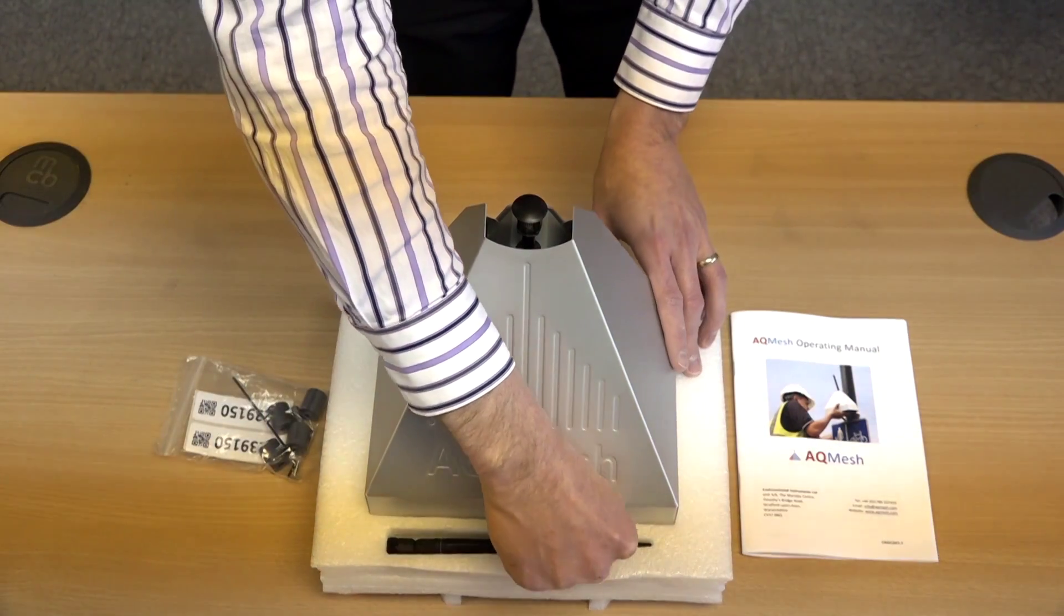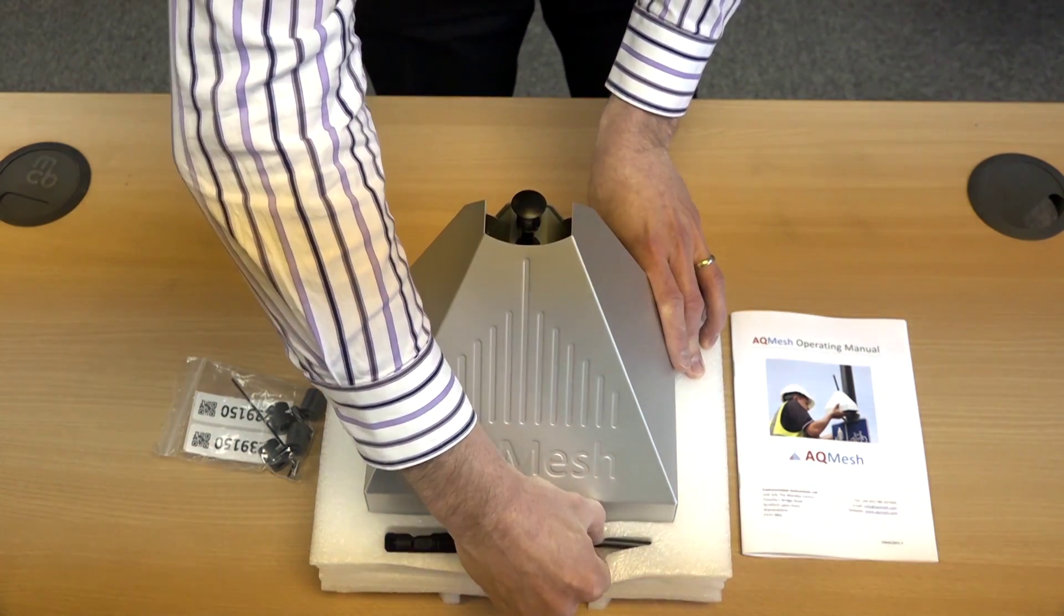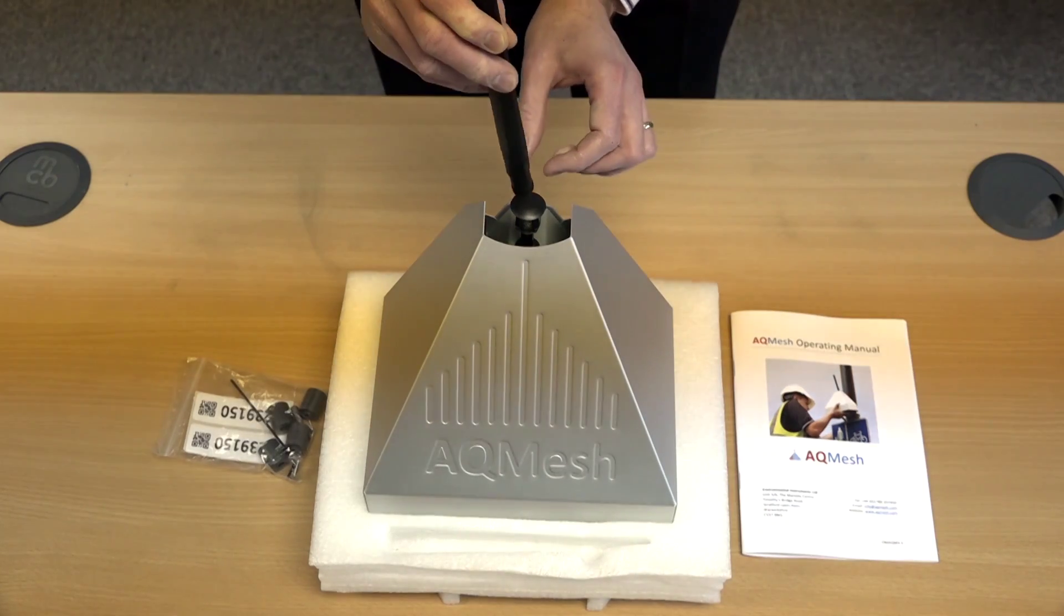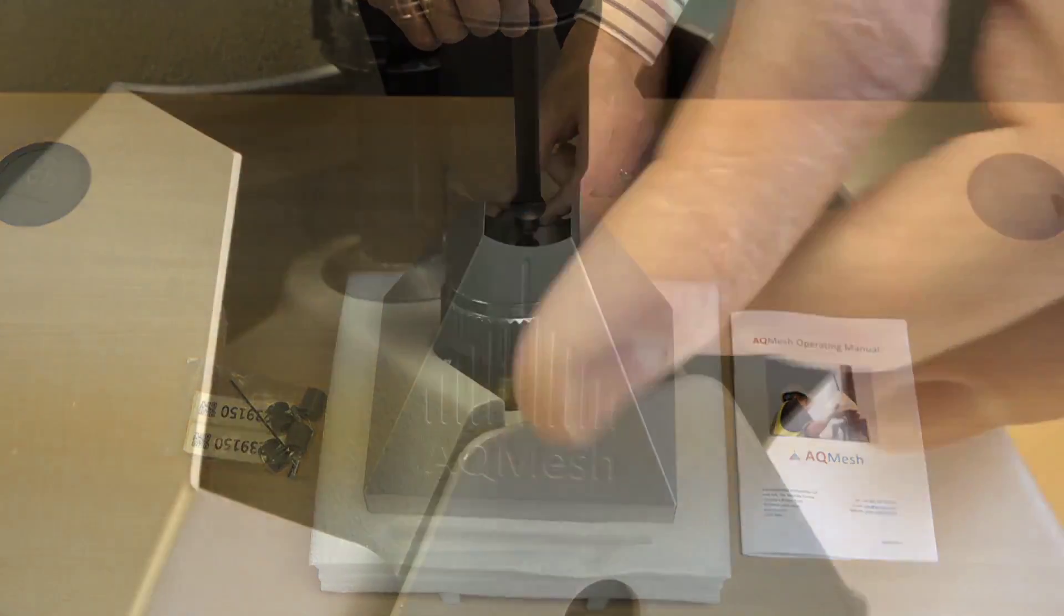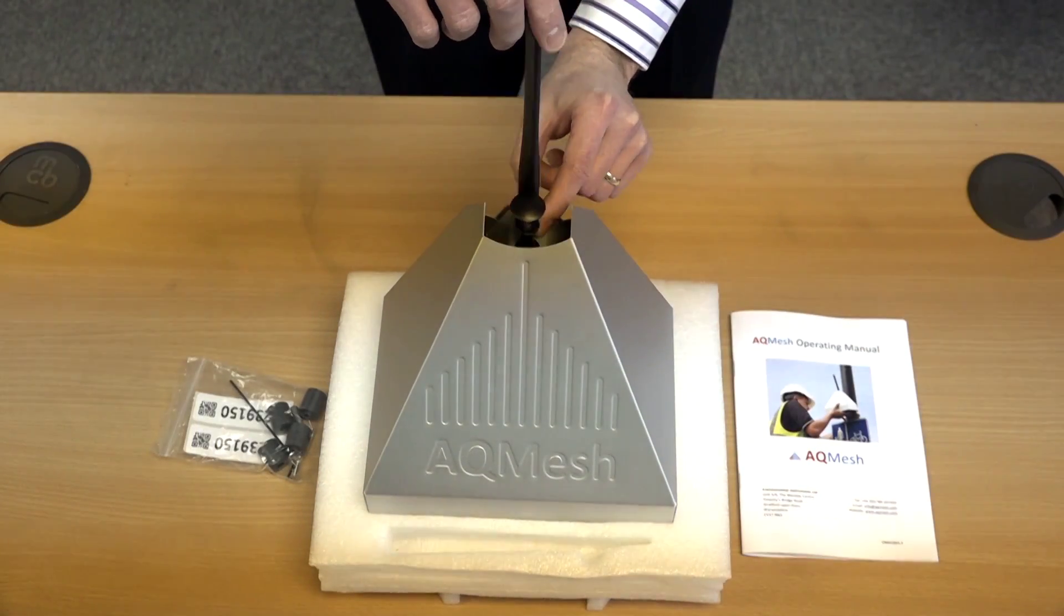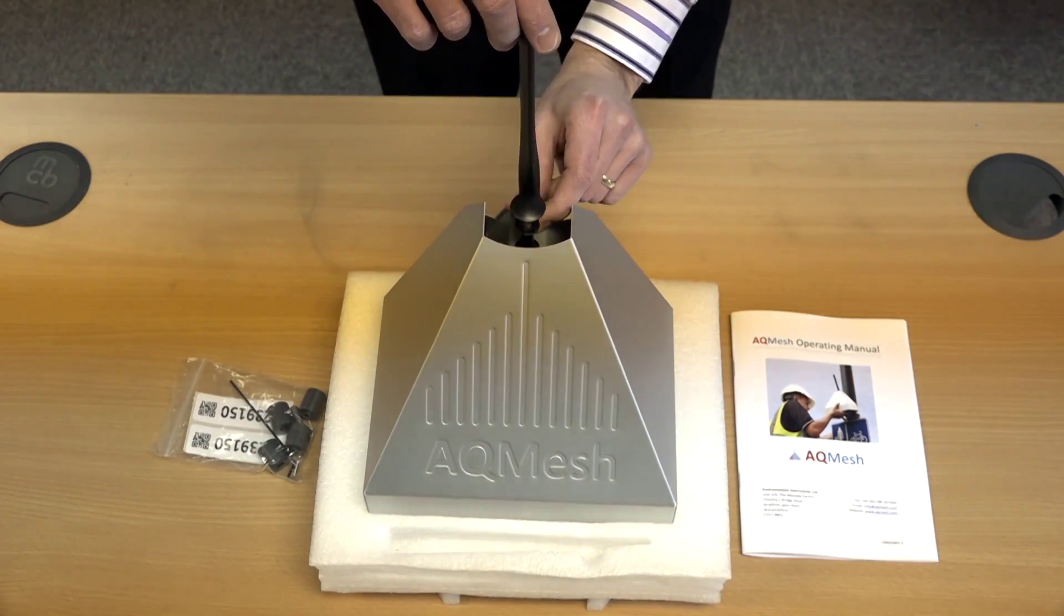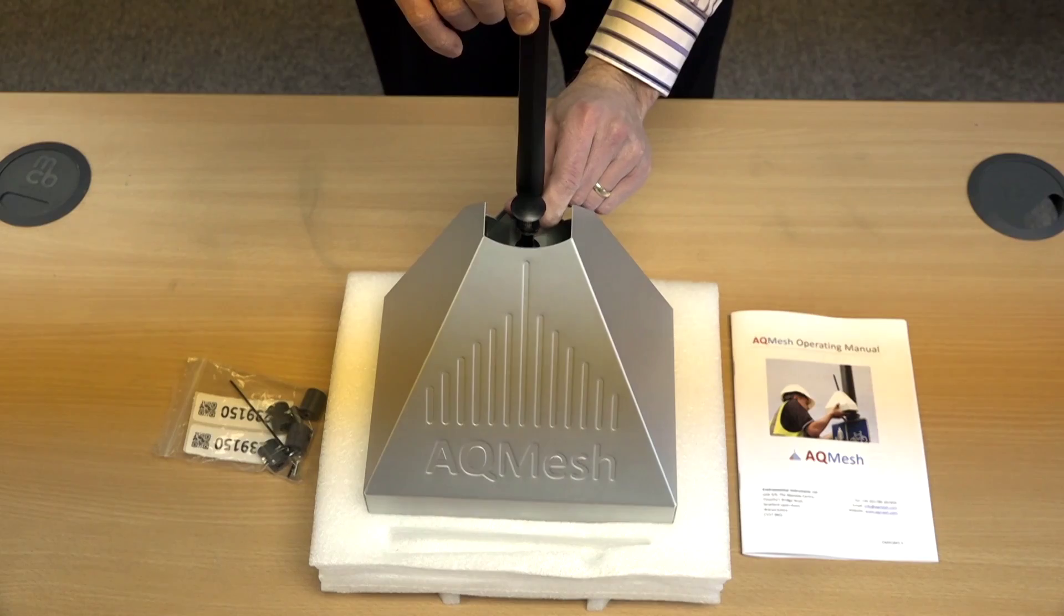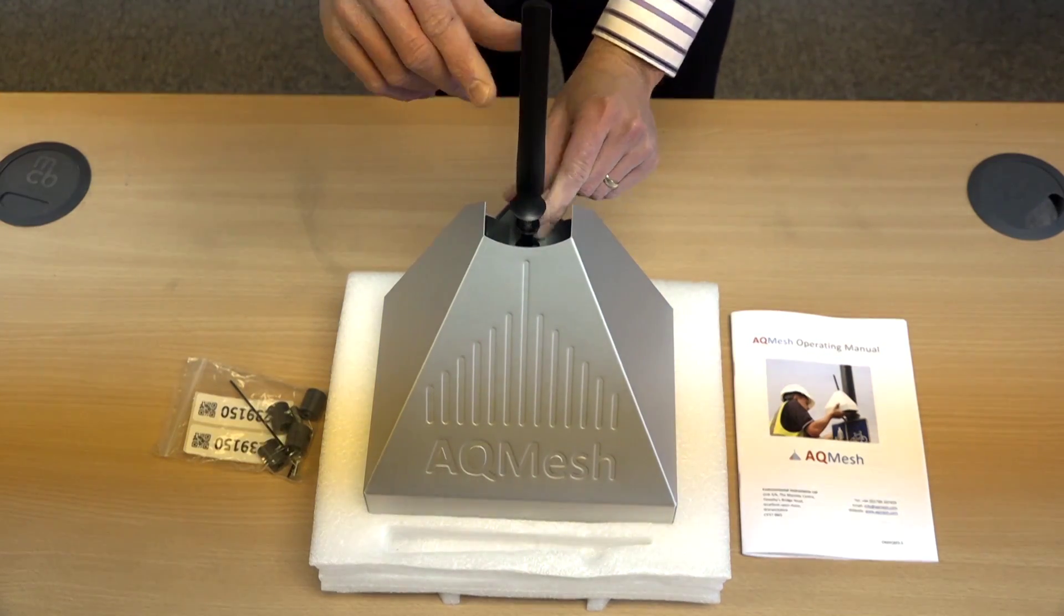First thing to do is remove the antenna from the packaging and install it onto the pod itself. Make sure that this is finger tight using the nut at the base and just nip it up to make sure that there is a good connection. Do not over tighten.